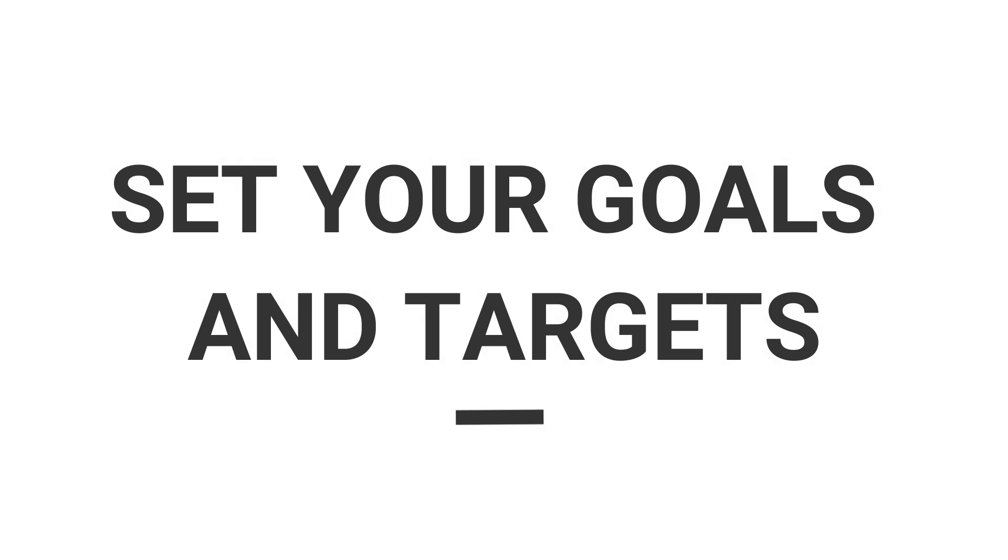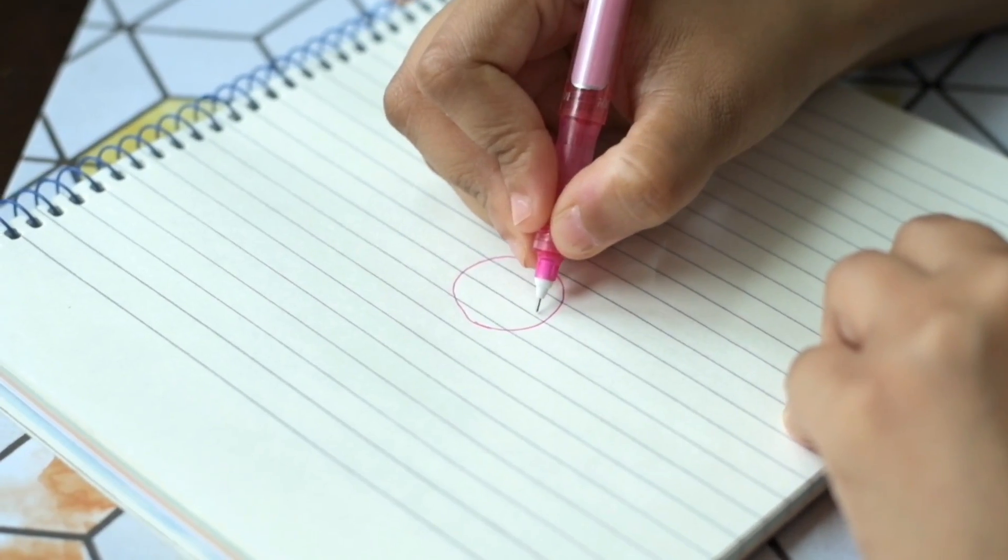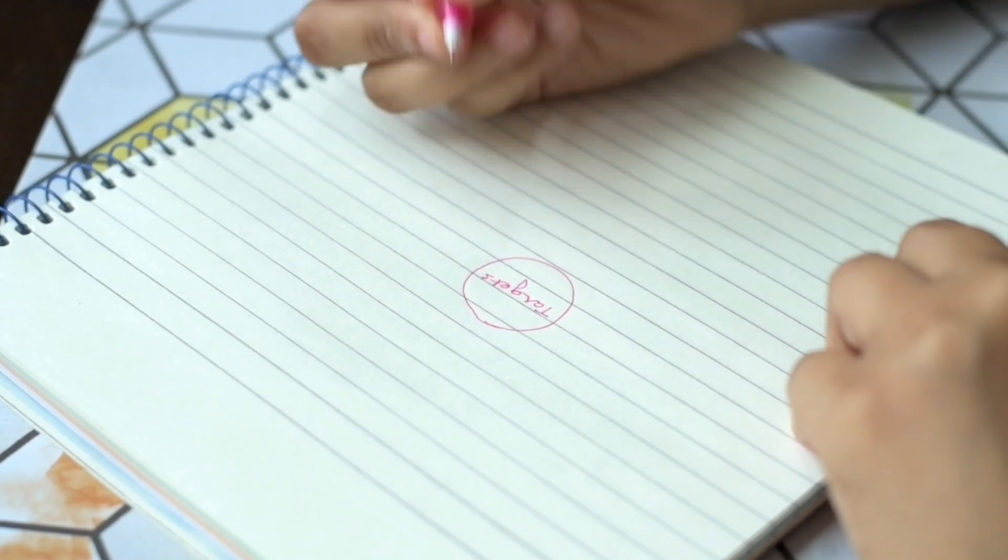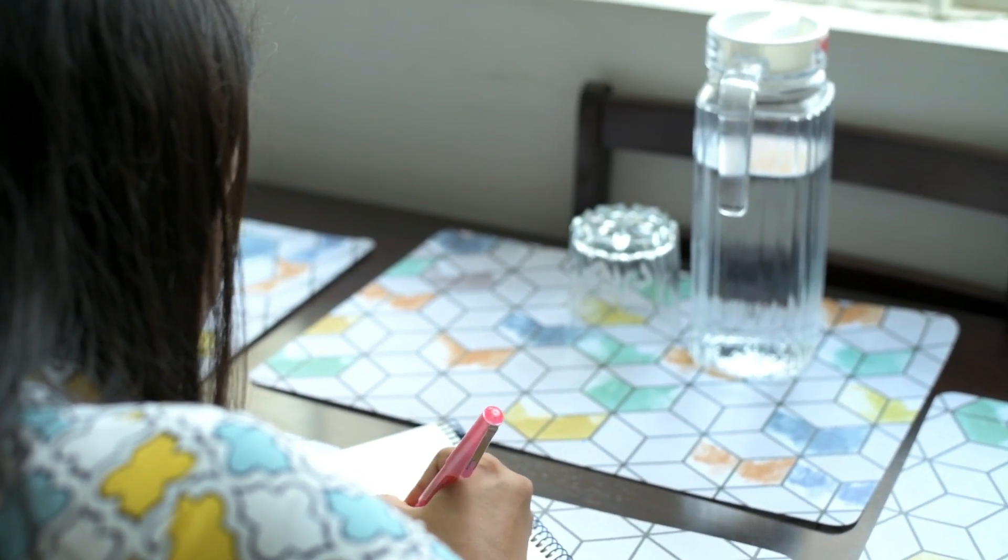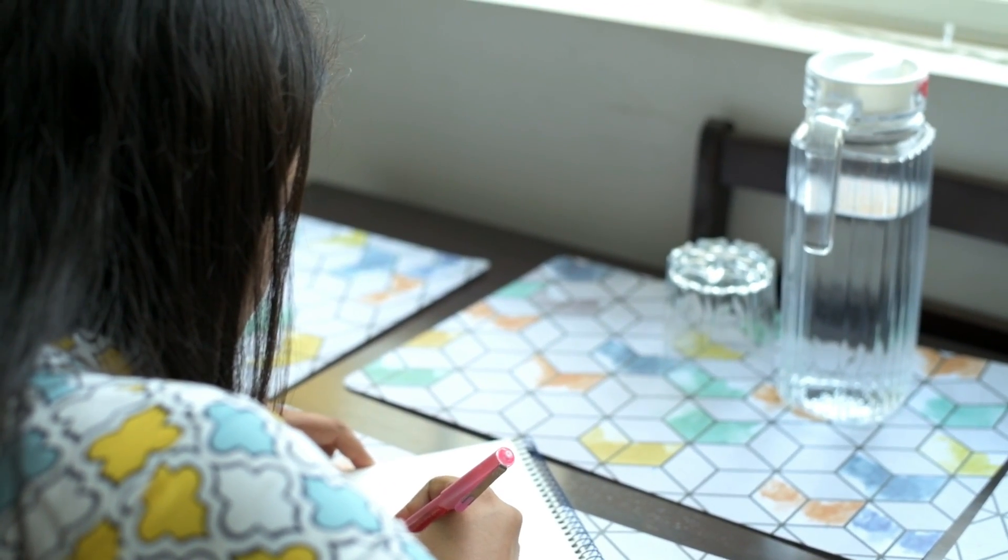So let's begin with the first step of the process which is setting your goals and your targets. Now the most important thing here is to have your goals and your targets very clear in your head. A lot of times we have these fleeting thoughts and we think about them once in a while, but the most important thing is to actually write them down so that they actually become formal targets for you to follow.